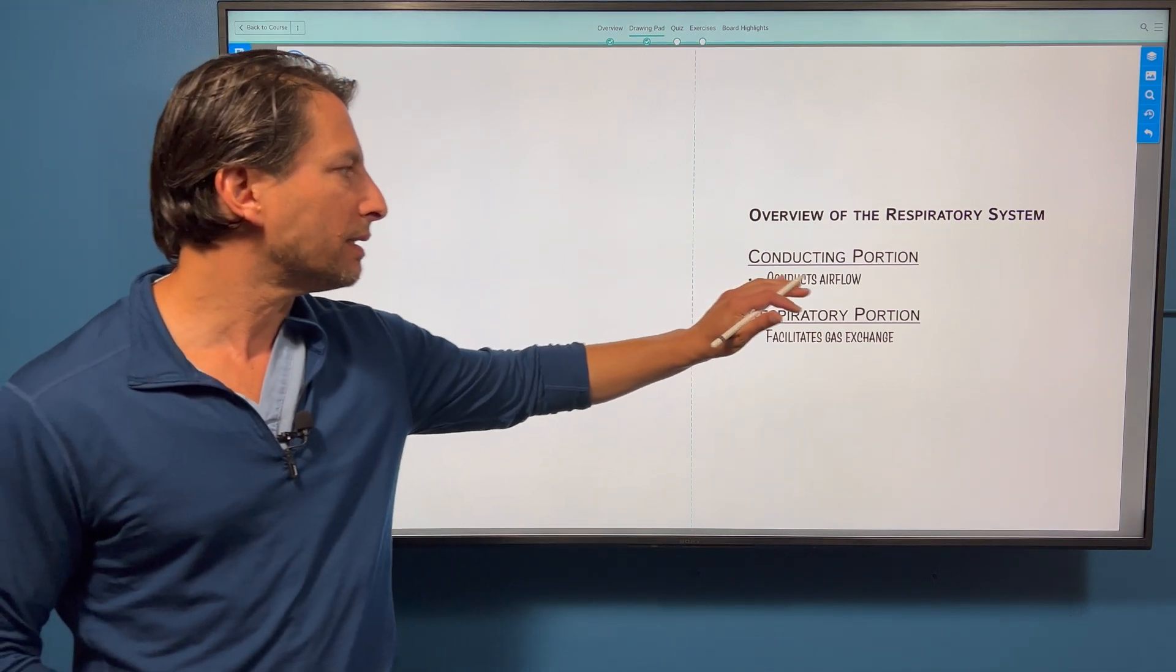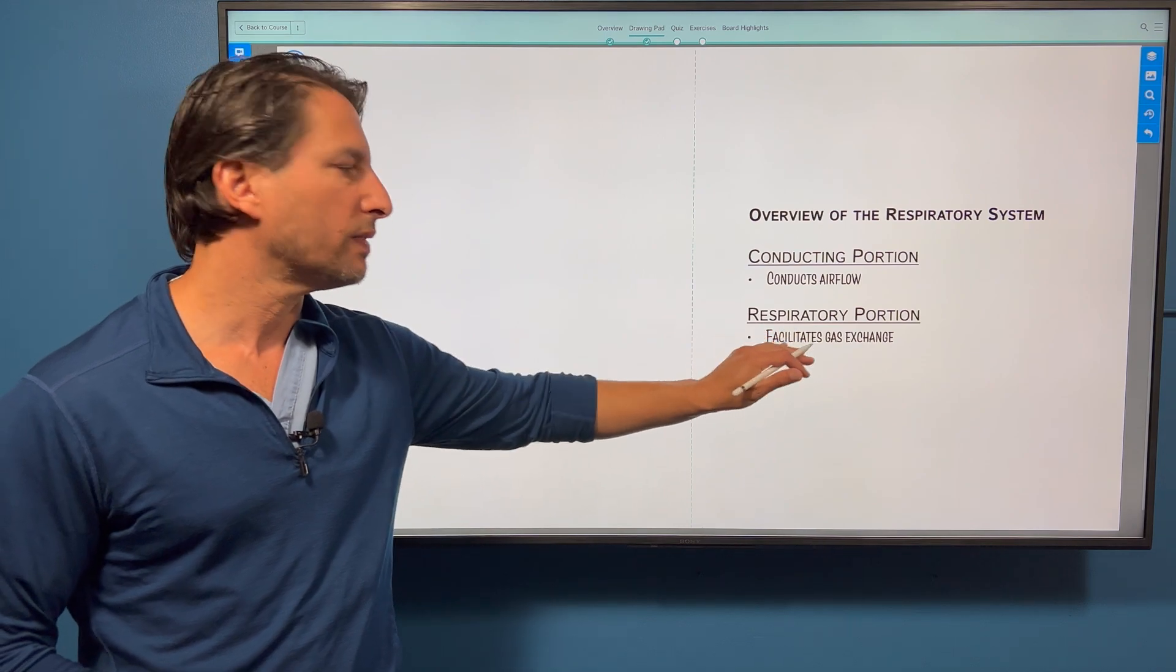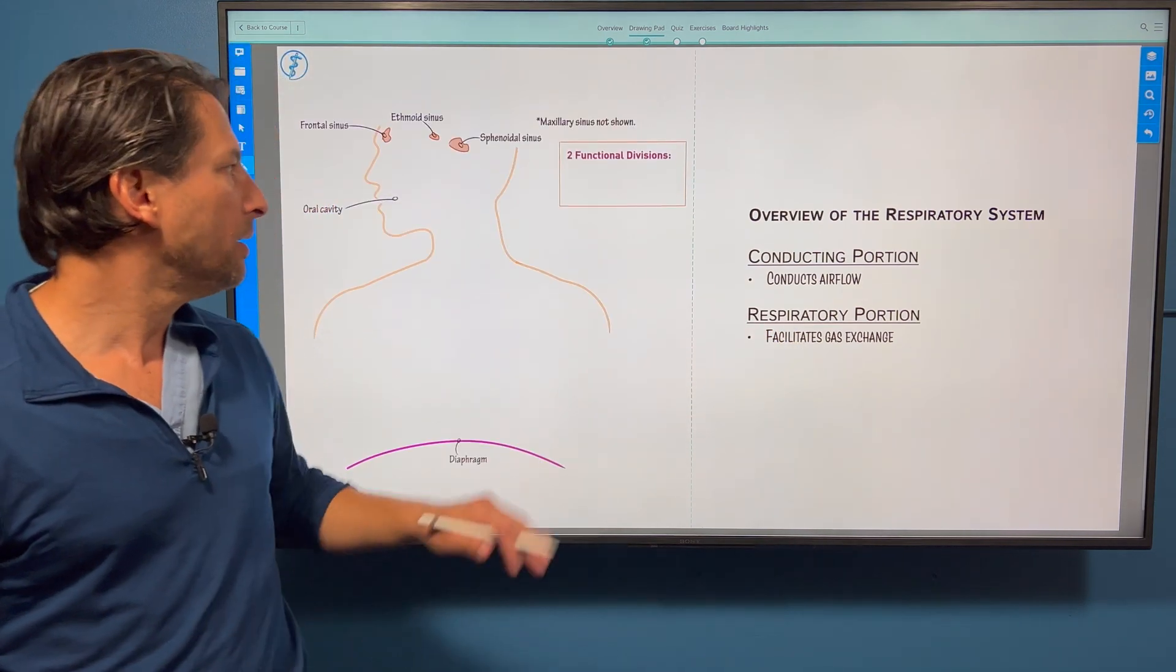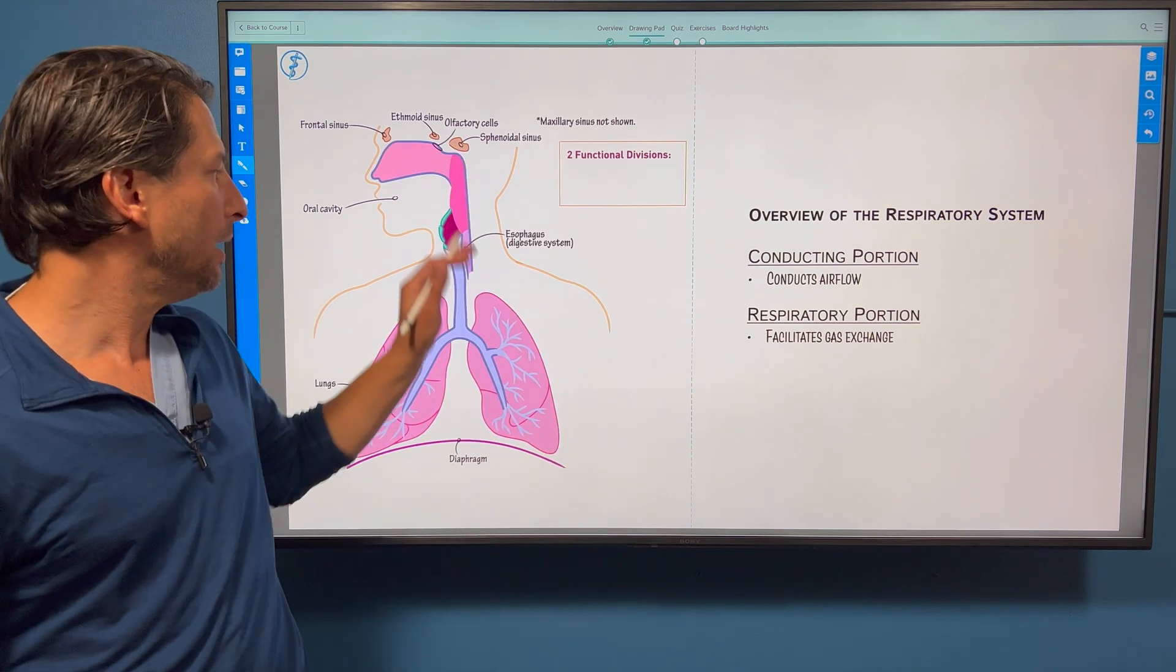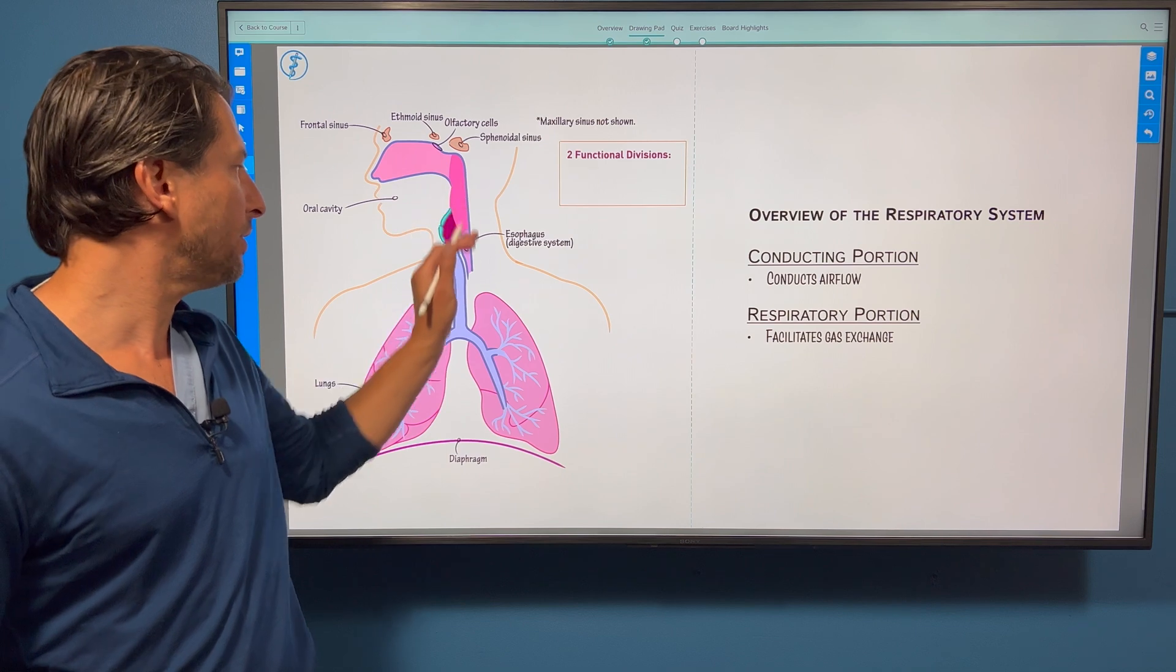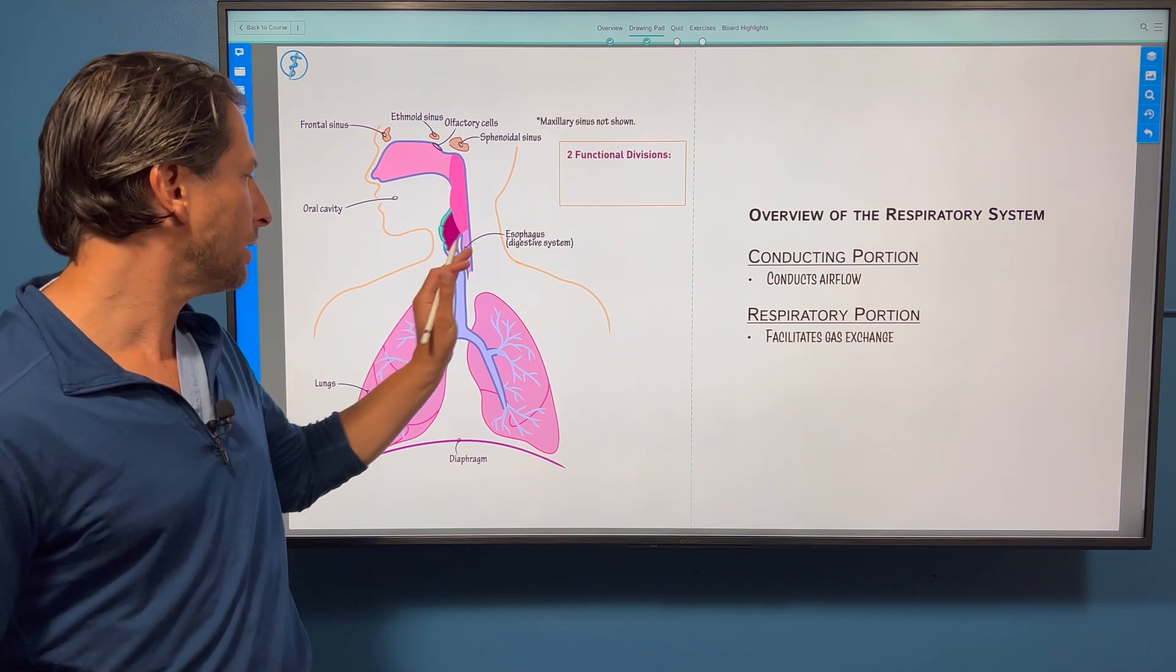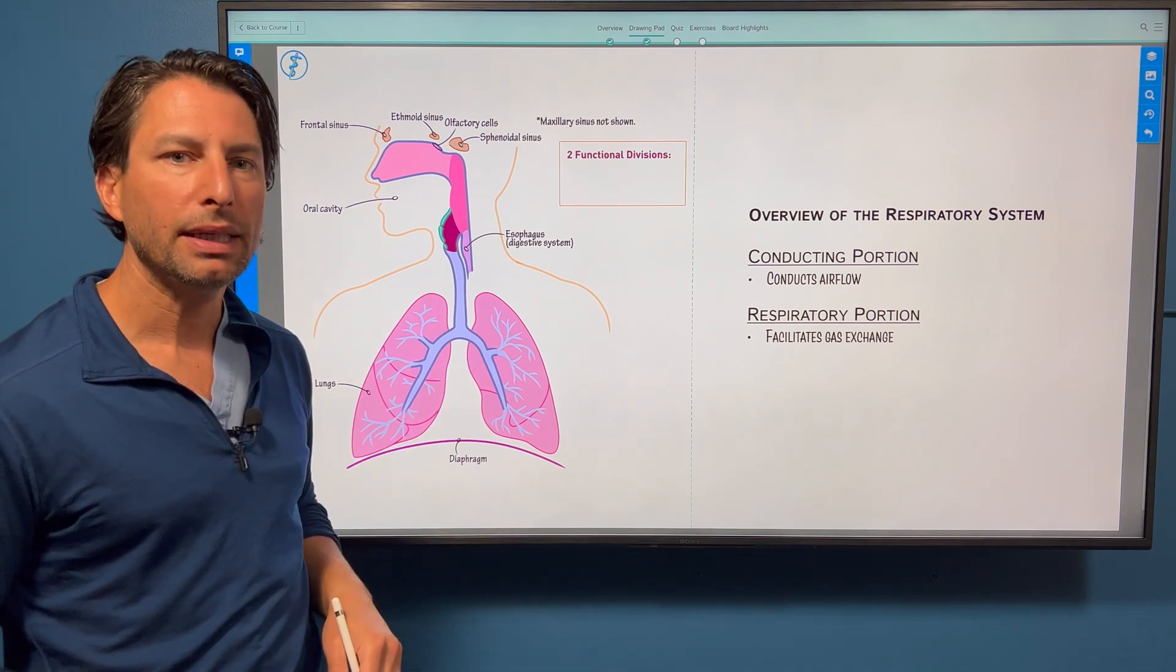We're going to differentiate the conducting portion, which conducts air flow, and the respiratory portion, which facilitates gas exchange. Here are some outlined structures with the sinuses included. Here are the key structures of the respiratory system: nasal cavity, pharynx, larynx, and then the tracheobronchial tree, and then the lung parenchyma itself.